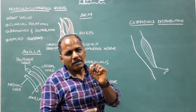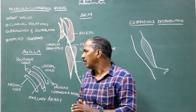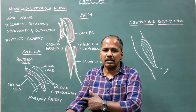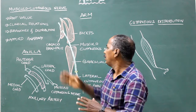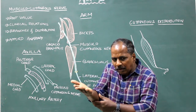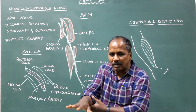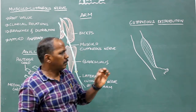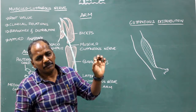Applied anatomy. Injury to the musculocutaneous nerve results in paralysis of biceps and brachialis. Brachialis is a powerful flexor, so flexion at the elbow joint is lost. Biceps, also known as the supinator longus, is a powerful supinator, so supination of the forearm is lost, resulting in pronation of the forearm. There is also loss of sensation over the lateral part of the anterior surface of the forearm.